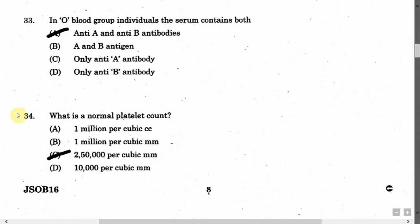The next question is: In O blood group individuals, the serum contains — Option A: Anti-A and anti-B antibodies. Option B: A and B antigens. Option C: Only anti-A antibody. Option D: Only anti-B antibody. The correct answer is Option A, that is anti-A and anti-B antibodies.